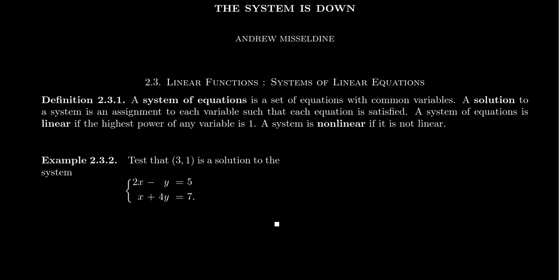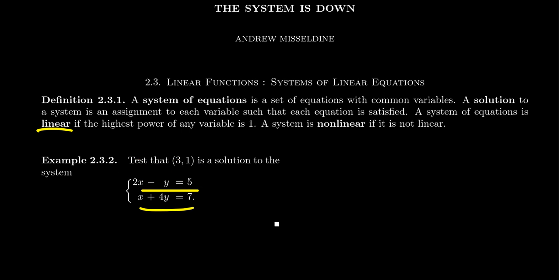We're going to be focused on systems of linear equations — that is, a system where every equation in the system is linear. In a linear equation, the exponent on each variable is always one, and you never have products of variables together. Sometimes we call it a linear system for short. Conversely, a system is nonlinear if there exists at least one nonlinear equation inside it. We will explore nonlinear systems later in this lecture series, but for now we're going to talk about linear systems, which are a lot more tame.